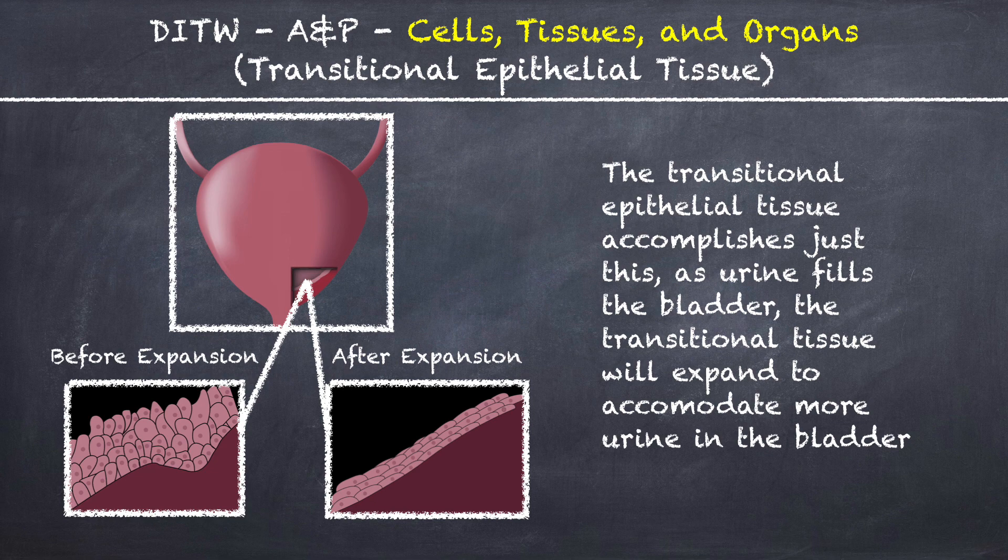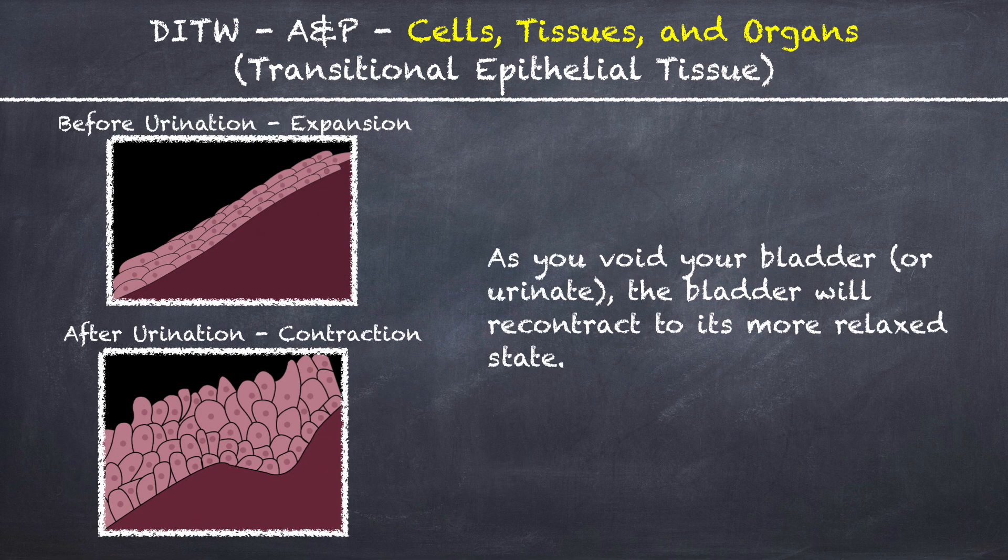As urine fills the bladder, the Transitional Tissue will expand to accommodate more urine in the bladder. As you void your bladder or urinate, the bladder will re-contract to its more relaxed state.